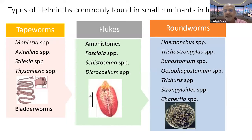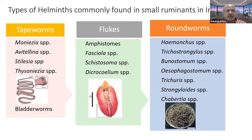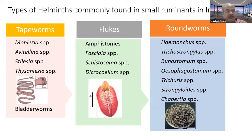As you all know, helminths can be divided into flatworms and roundworms, and flatworms are further divided into tapeworms and flukes. In tapeworms, Moniezia is the most predominant species, followed by Avitellina and Stilesia. When I was working in the department of parasitology at Bombay, postgraduate students used to go to the slaughterhouse — the biggest in India, with around six to seven thousand sheep and goat slaughtered daily — and they got tapeworms in buckets. That is the magnitude of tapeworm infections.